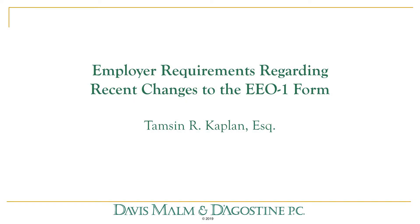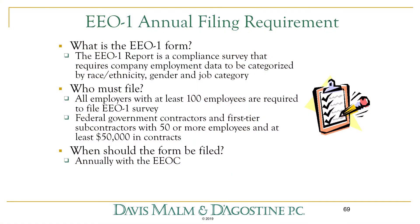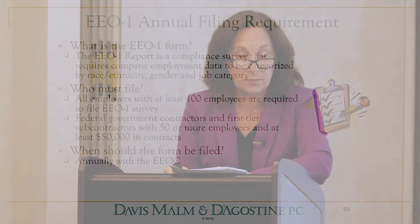The EEO-1 form is required to be filed annually online with the Equal Employment Opportunity Commission. It is required to be filed by employers who have 100 or more employees, and it includes data characterized with respect to race, ethnicity, gender, and job category for your workforce.